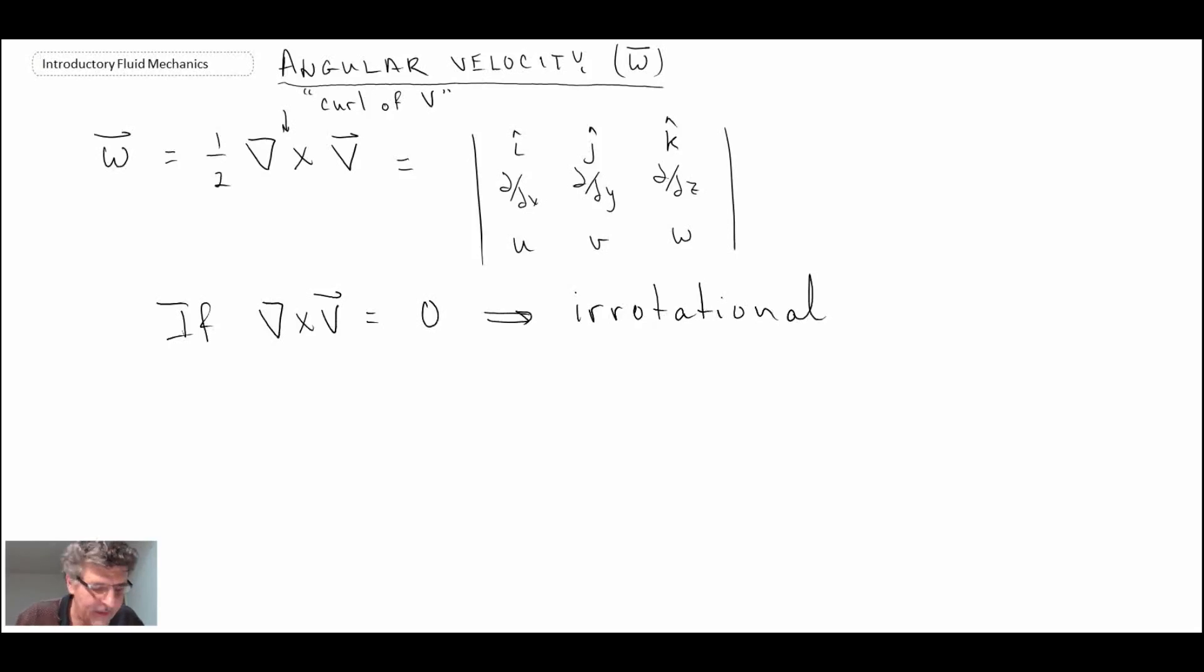If it turns out that we have a flow where del dot V is equal to zero, and del cross V is equal to zero, that would be a flow that is incompressible and irrotational. That is a special subset of fluid mechanics that we refer to as being potential flow.